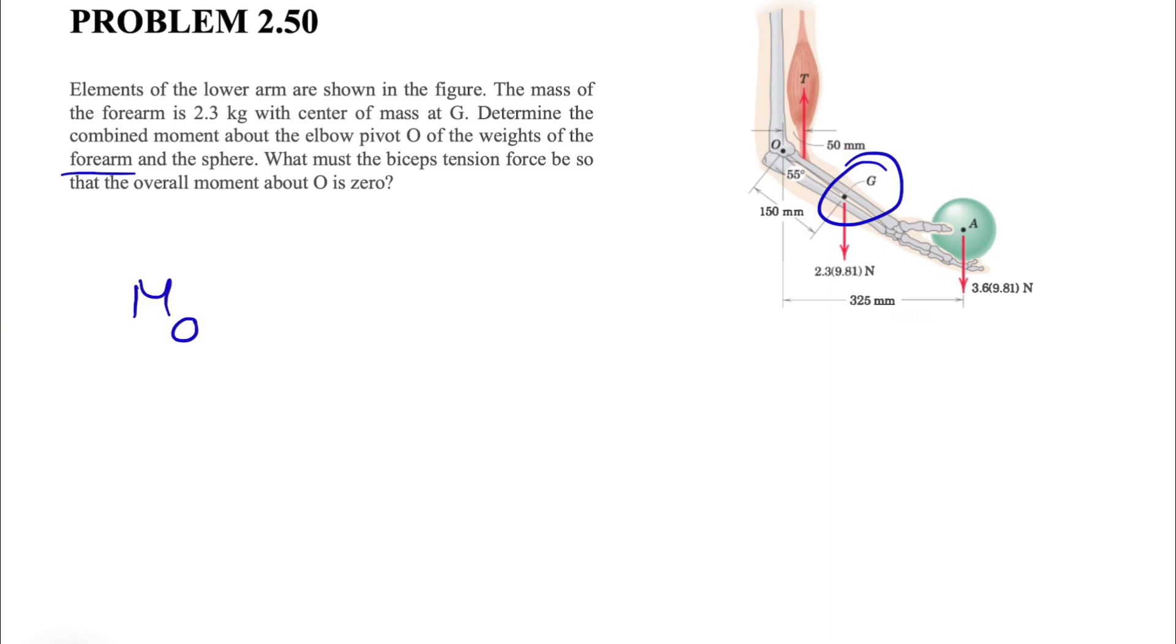We're looking for moment about point O. We'll call counterclockwise positive and we have two different moments. We have the moment of the forearm, which we have to figure out. We're going to use the 2D shortcut. The forces are already in Newtons, which is the weight or mass times acceleration of gravity, which will be g or 9.81 meters per square second.